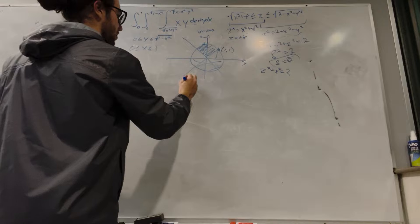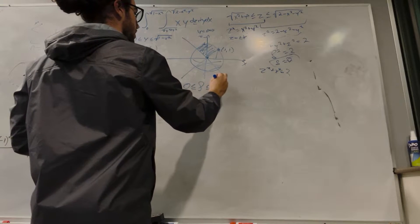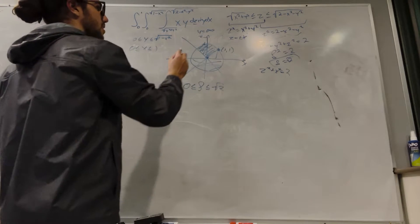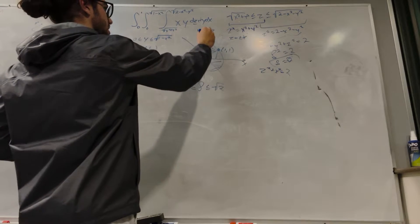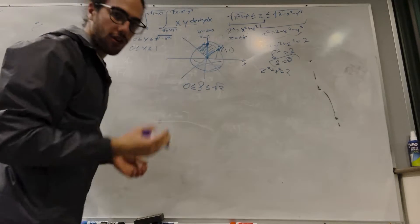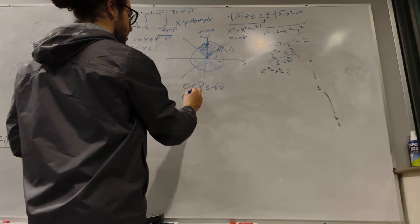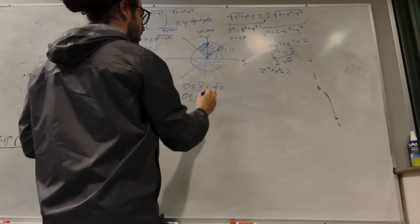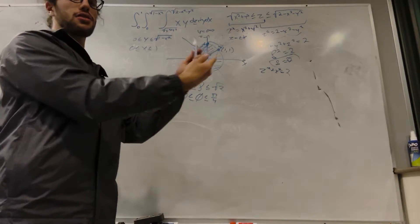So we know that rho goes from 0 all the way out to square root of 2. And we know that phi goes from 0 — this is where phi starts — and it curves down until it hits the cone, which ends at pi over 4 because it's a 45 degree angle. So 0 is less than phi less than pi over 4.